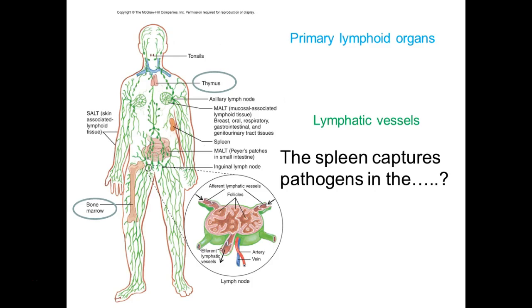We refer to lymph nodes as secondary lymphoid organs, and your body has just got tons of them. The purpose is to filter all this lymph so that the bad guys do not get into your circulation.